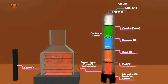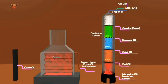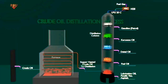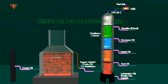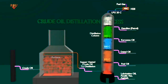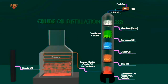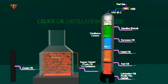Products from the distillation tower range from gases at the top to very heavy, viscous liquids at the bottom. In all cases, these product streams are still considered unfinished and require further processing to become useful products.